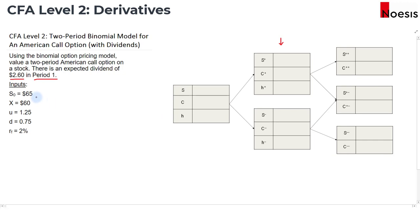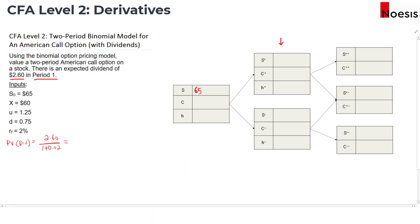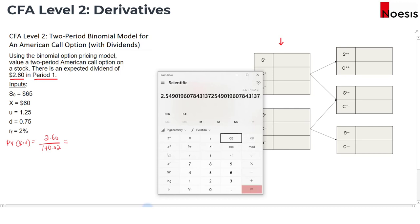The inputs we're going to assume here are as follows. The initial price of the stock is $65. Before we start, we will need to calculate the present value of the dividend and subtract the present value of the dividend from the initial price. With the dividend expected in period 1, we will discount it back by one period to period 0.